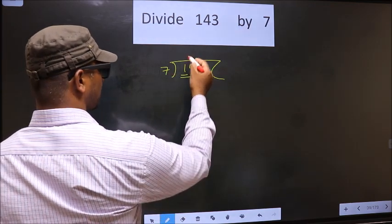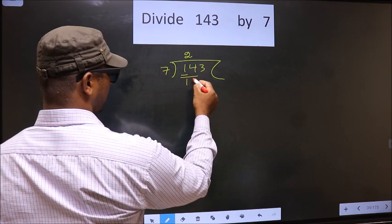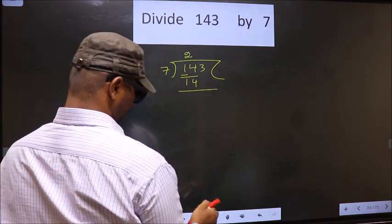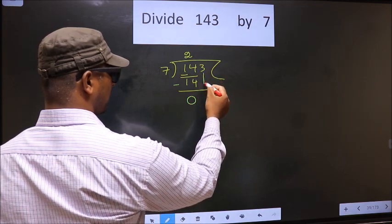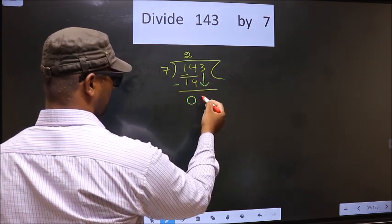When do we get 14 in 7 table? 7, 2 is 14. Now you subtract. 14 minus 14, 0. Now we bring down the beside number down that is 3.